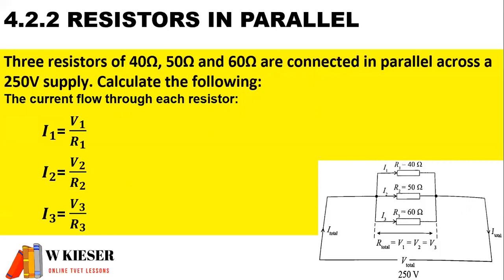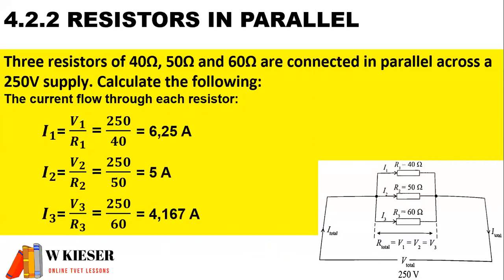To calculate the current flow through each resistor: current in the first branch will be I1, current in the second branch will be I2, and current in the third branch will be I3. The supply voltage is the same as the voltage across each resistor, which is 250 volts. R1 is 40 ohms, R2 is 50 ohms, and R3 is 60 ohms. If we add up the current through each branch, it will be the same as the supply current.